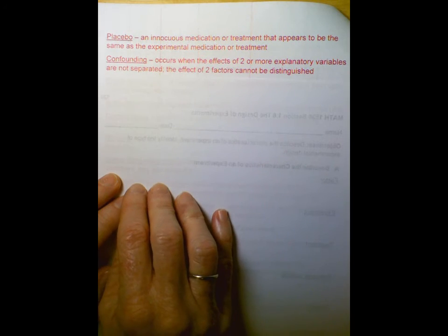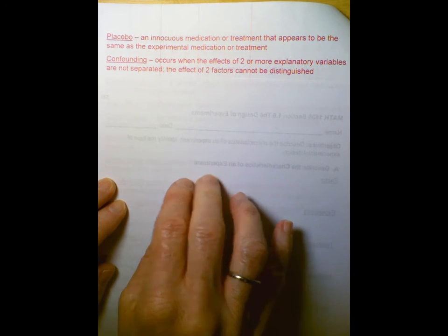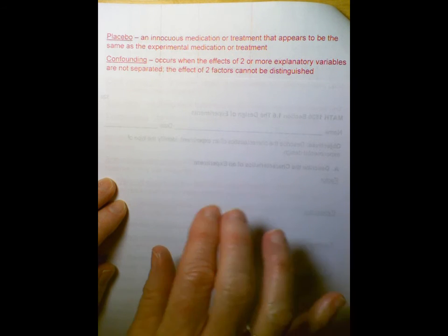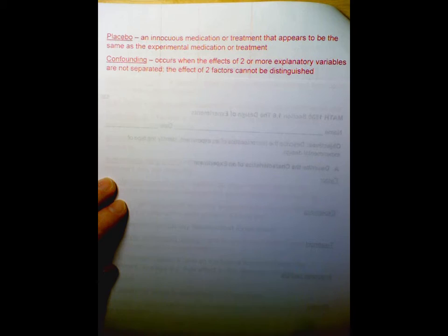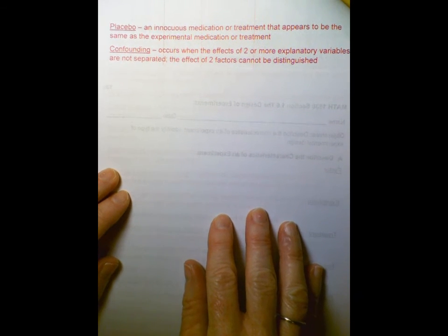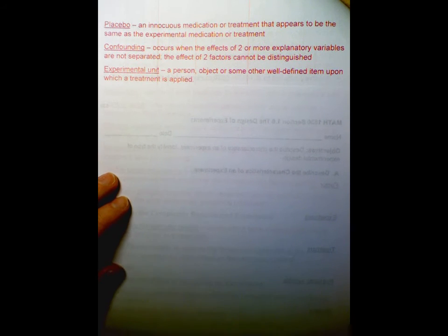Confounding. Another word we've seen before. It occurs when the effects of two or more explanatory variables are not separated. The effect of two factors that cannot be distinguished. For example, people and their gender in medical studies, that gender wasn't broken out previously in a lot of studies and it confounded the results.